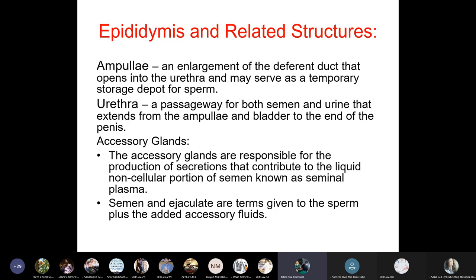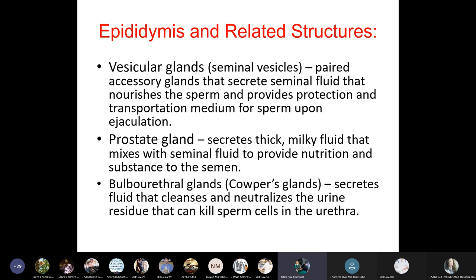The accessory glands produce secretions that contribute to the liquid, non-cellular portion of semen known as seminal plasma. The vesicular glands (seminal vesicles) are paired accessory glands that secrete seminal fluid to nourish sperm and provide protection and a transportation medium upon ejaculation. The prostate gland secretes a thick milky fluid that mixes with seminal fluid to provide nutrition to semen. The bulbourethral glands, also known as Cowper's glands, secrete fluid that cleanses and neutralizes urine residue that can kill sperm cells in the urethra.